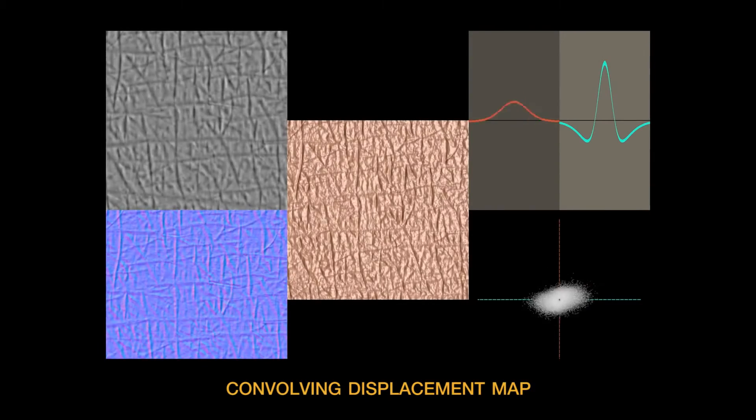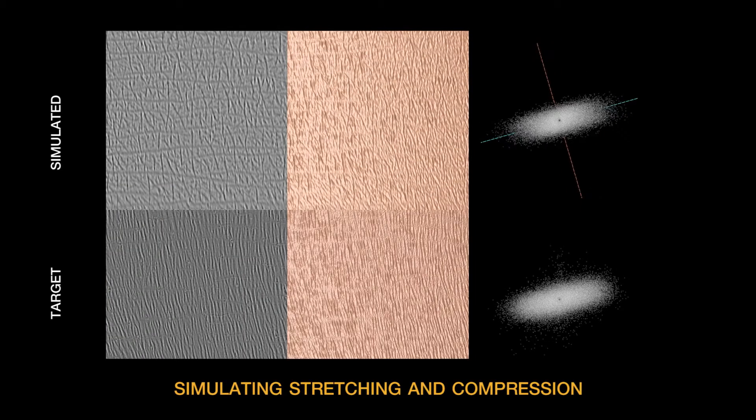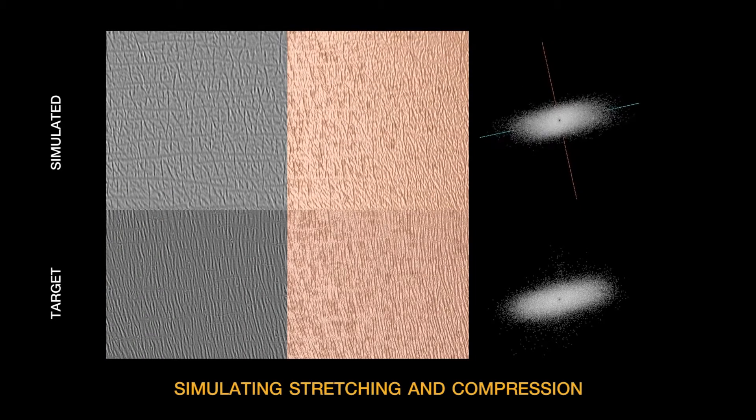Using the measured microstructure normal distributions as a guide, we blur the microstructure in the direction of stretching and sharpen the microstructure in the direction of compression. Thus, the surface flattens when stretched and appears to bunch up when compressed.